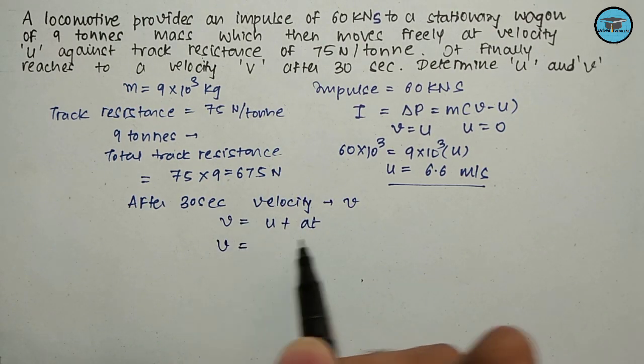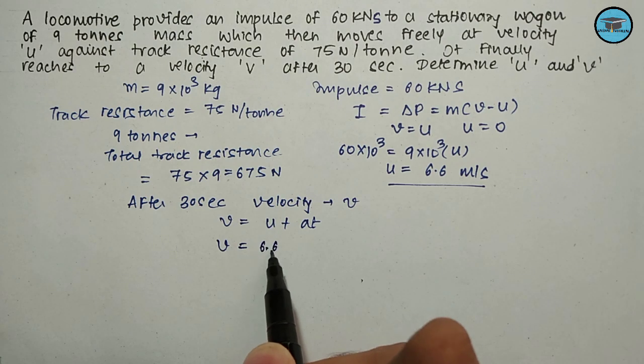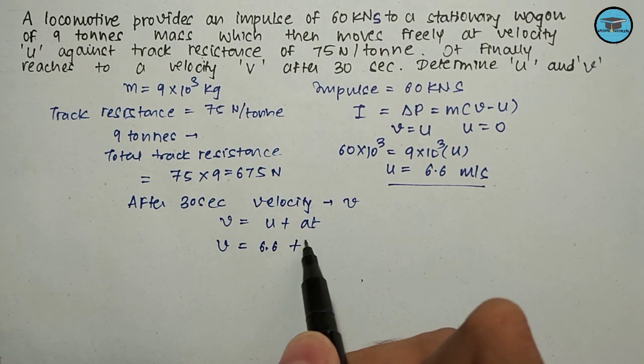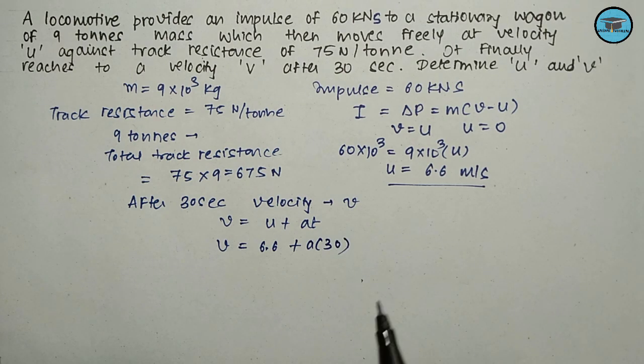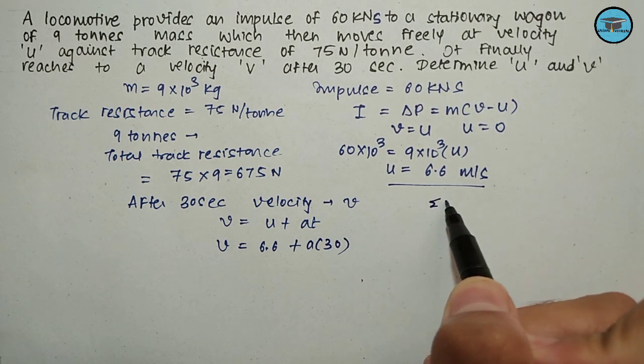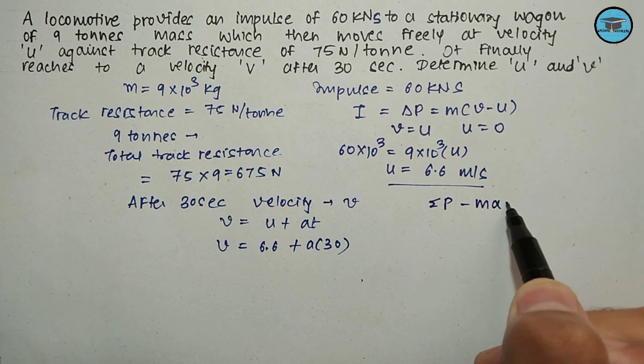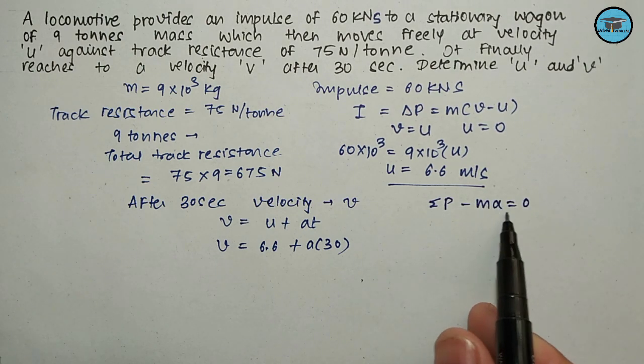Applying the law of motion, V = U + at. So V equals U, which we determined as 6.6, plus acceleration a times 30 seconds. Now we will apply D'Alembert's principle, ΣF - ma = 0, to determine the value of a.